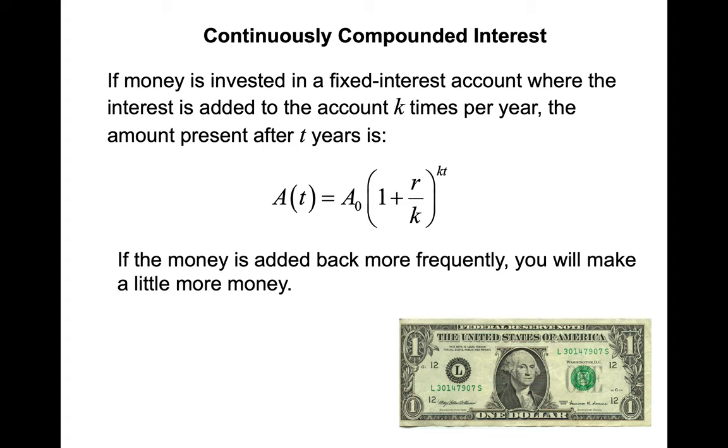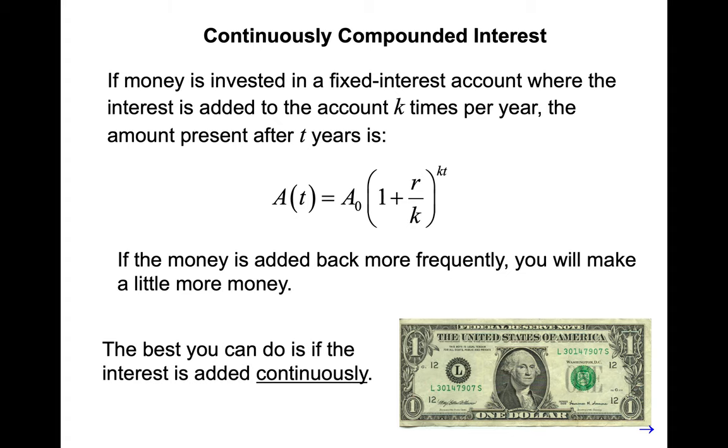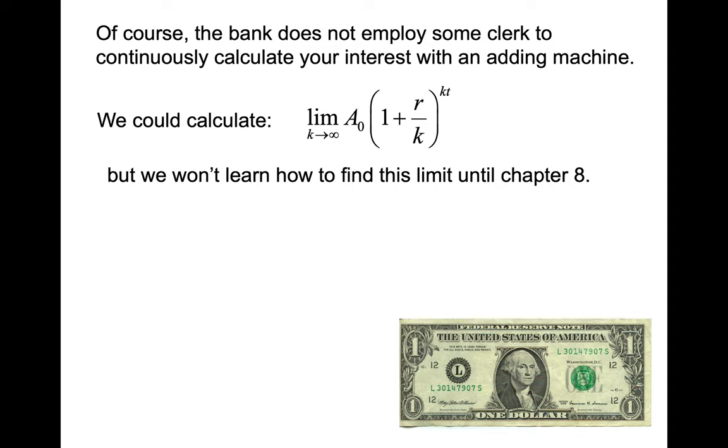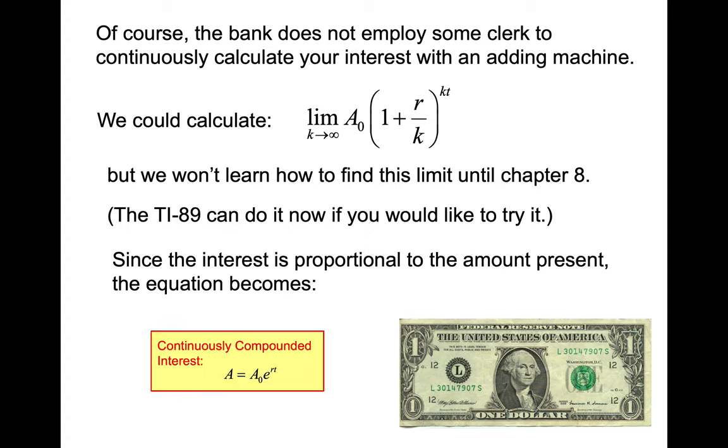So if the money is added back more frequently, you make a little more money. So the more frequently they add the money back. And so there is something called continuously compounded interest. And of course, that doesn't mean that somebody is continuously working on your interest rate. But what that looks like, and you could do this with calculus to solve that, we are not going to do that. I know here it says you'll learn it in chapter eight, but we don't. Here's some good news, you guys. This is the last lesson in chapter five, and we only have three sections to cover in chapter eight. So we're making progress. So we don't actually get to the part where we do this using the limit. We just are going to use the formula.